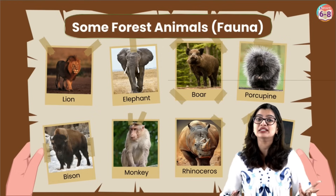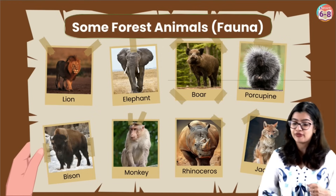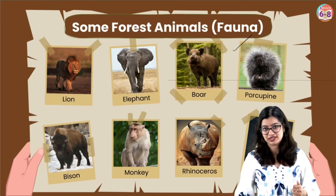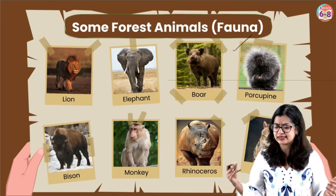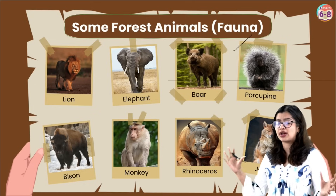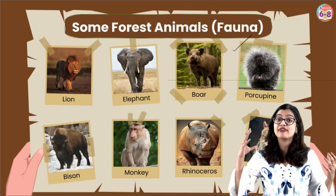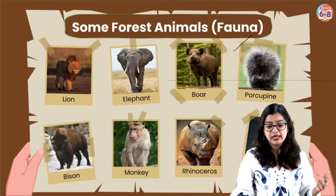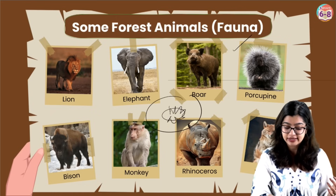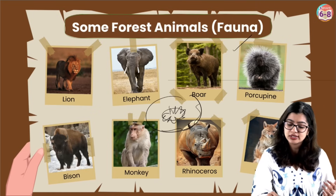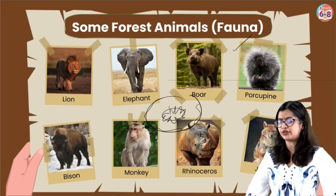The animals that we find in the forest are called the fauna. Examples include lion, elephants, boars, porcupines, bison, monkeys, rhinoceros, and jackals — all found deep in the forest. These animals are situated closer to the deeper regions and not the peripheral regions, though some animals are also found in the peripheral regions.